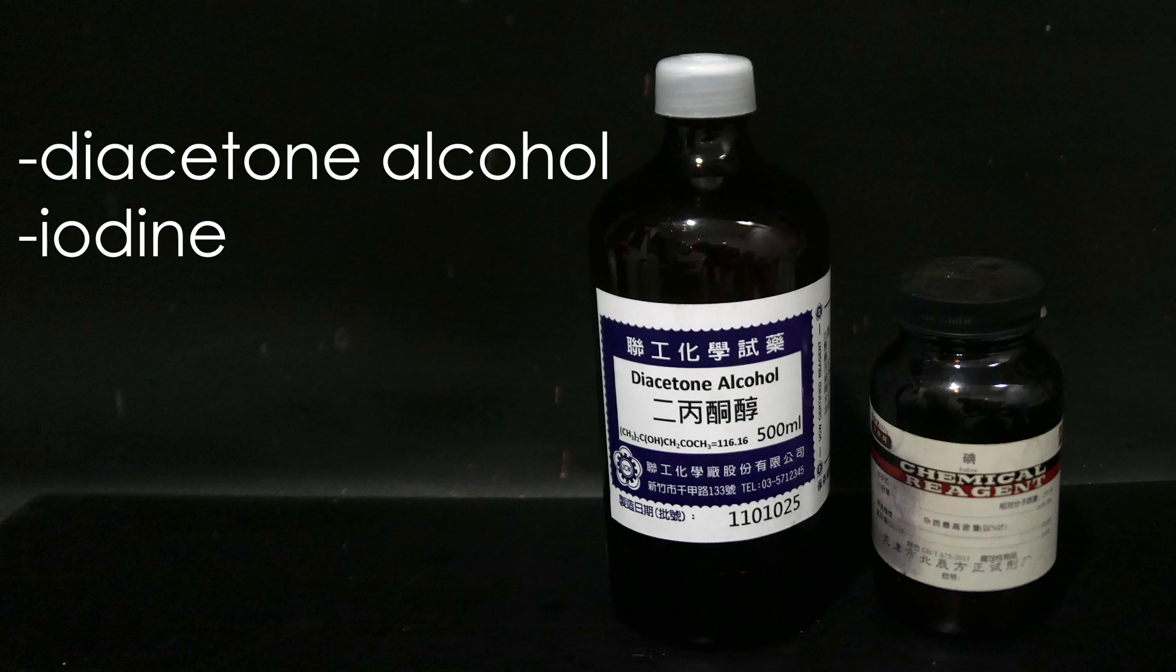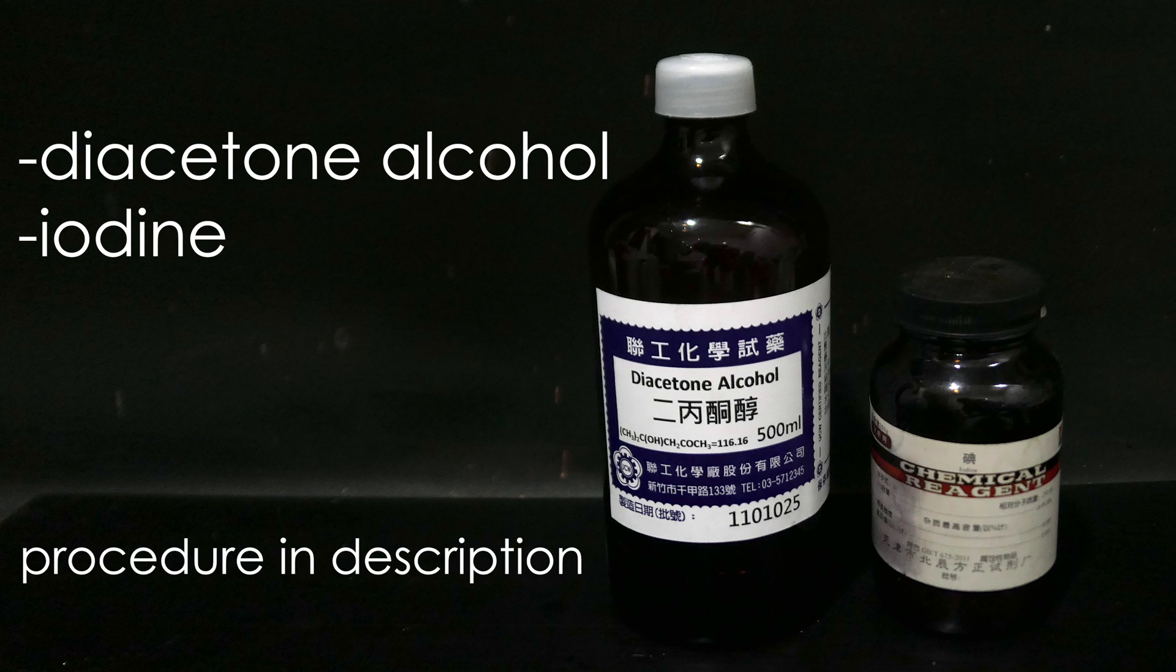In terms of chemicals, there are only two chemicals needed: diacetone alcohol and elemental iodine as a catalyst. If you don't have diacetone alcohol, you can make it from acetone instead. But when trying out making diacetone alcohol from acetone, only got 7% yield after 48-hour reaction time, so I just bought a bottle of diacetone alcohol instead.